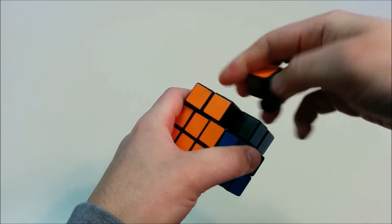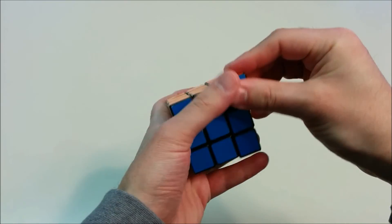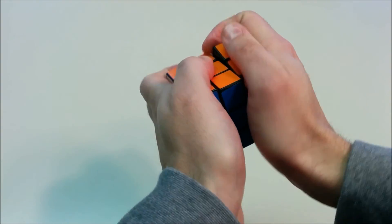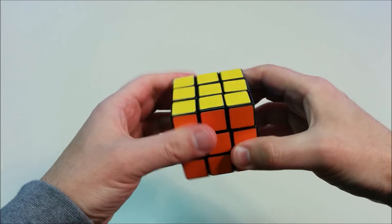But once you get it finally done, you put the last piece in and you will have a solved cube. So that's how you cheat at solving the Rubik's Cube.